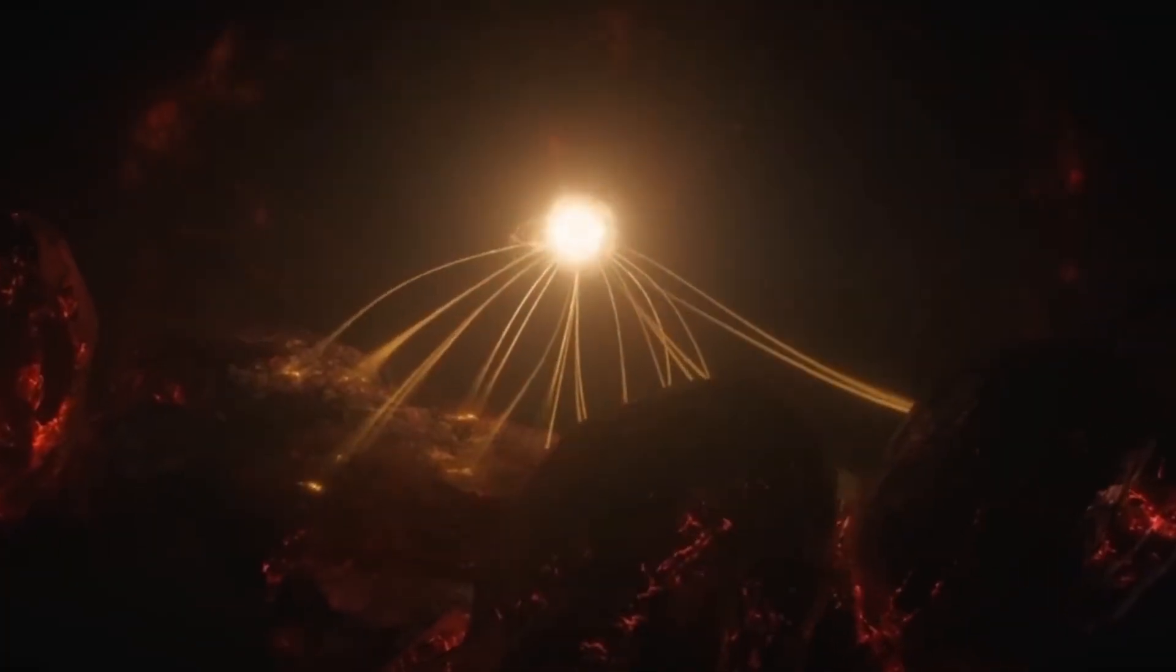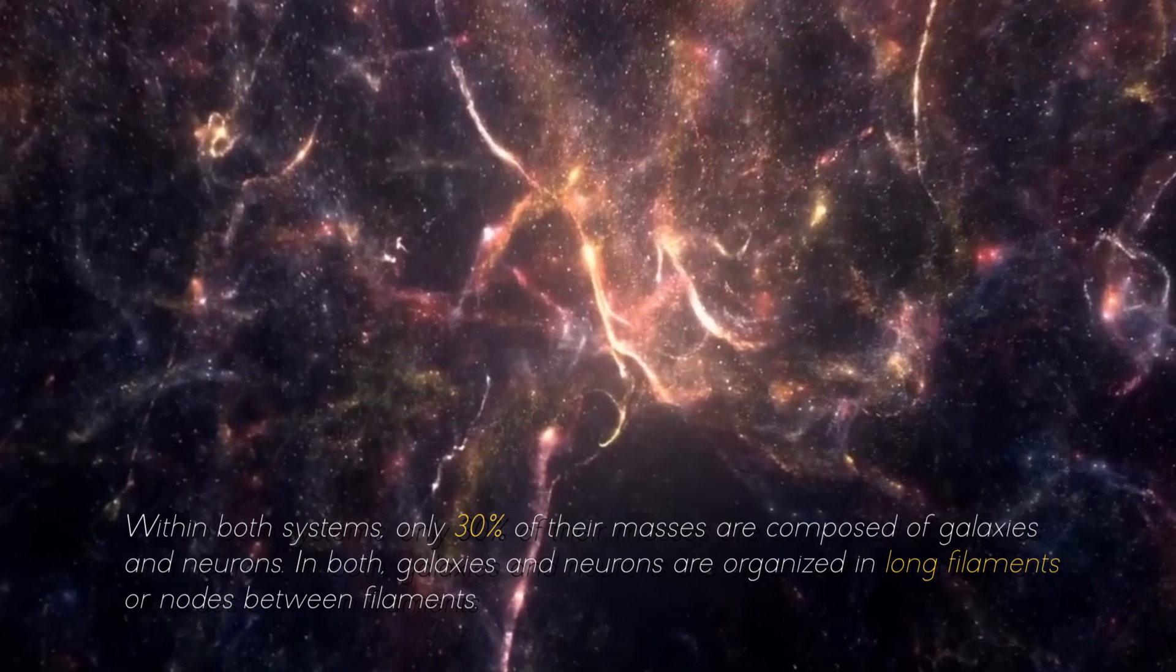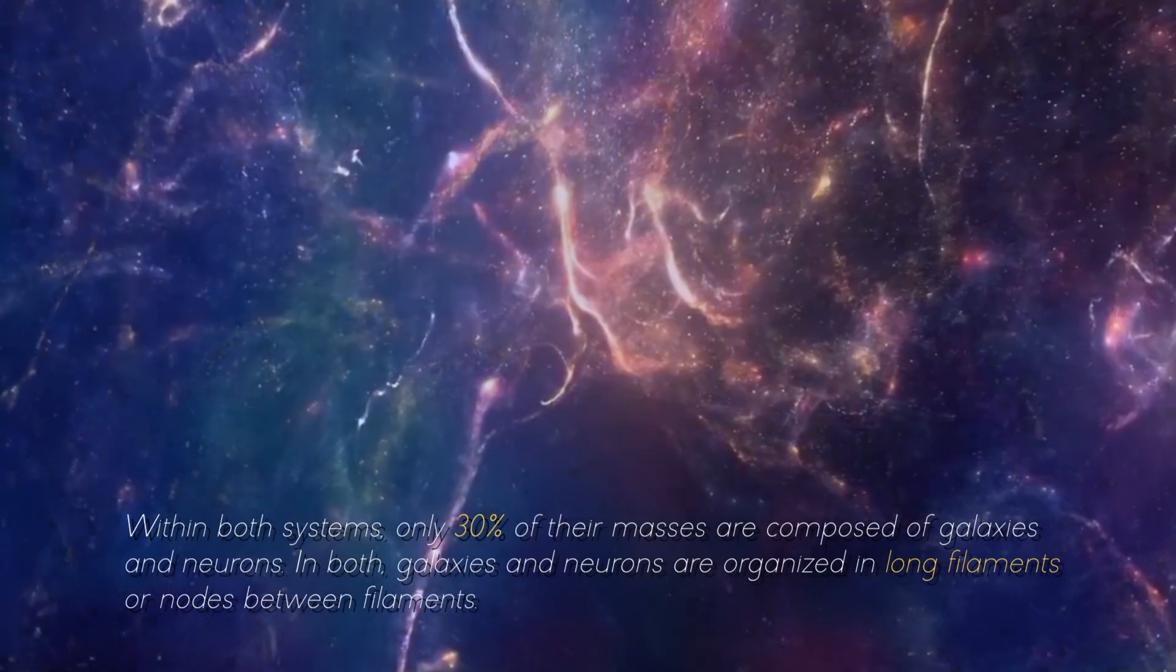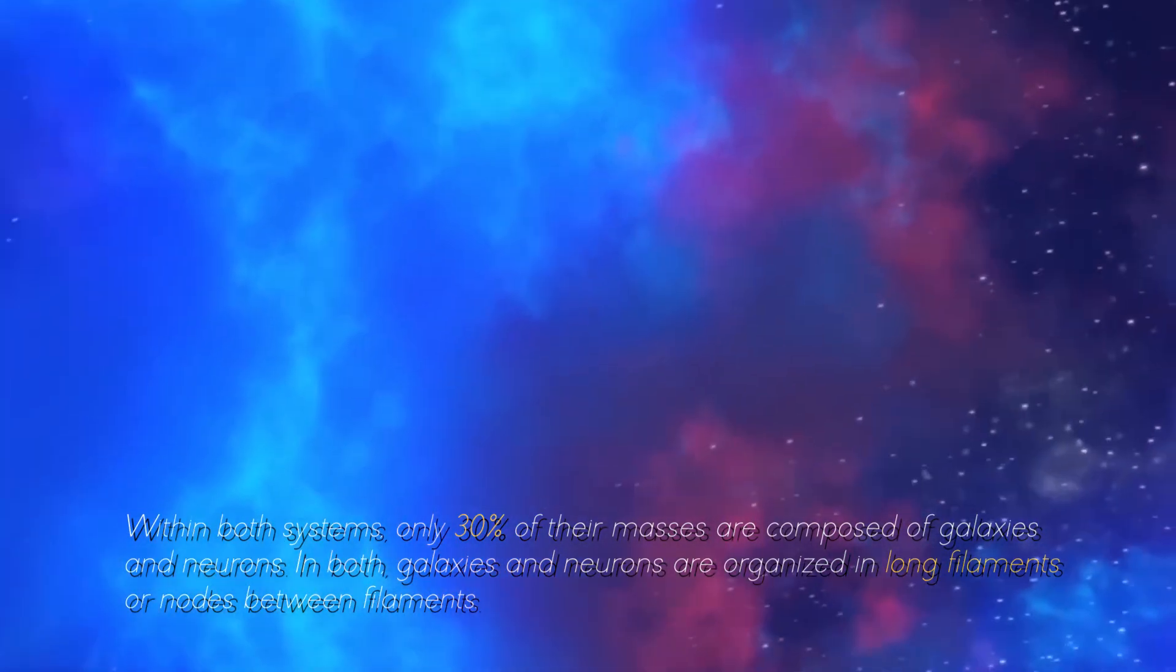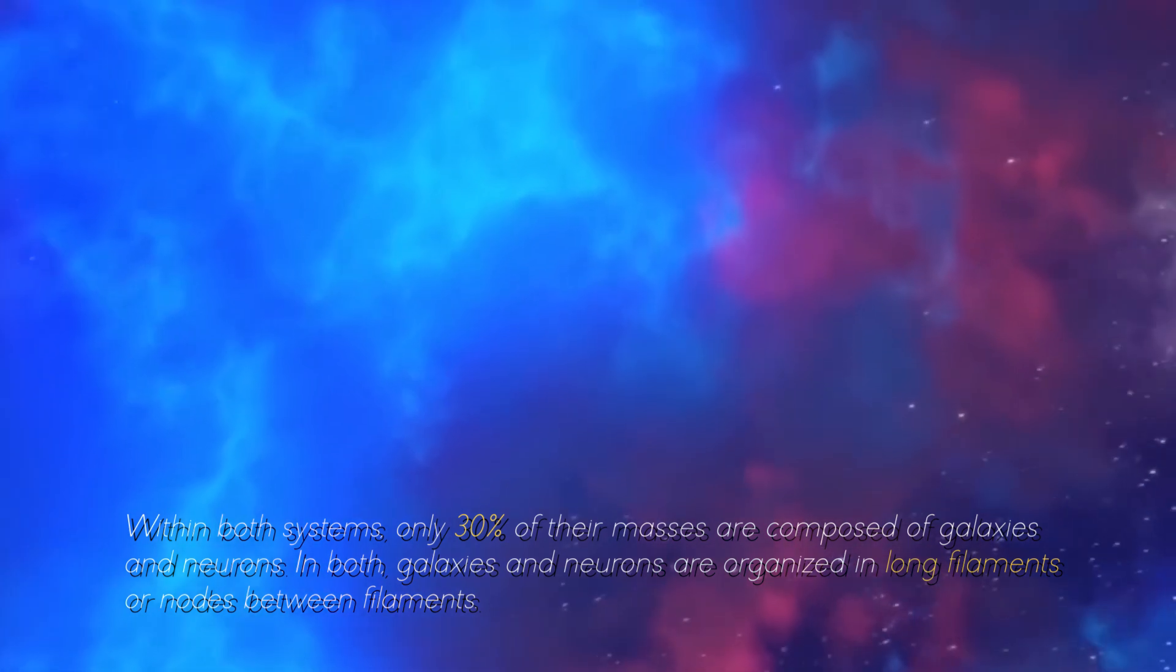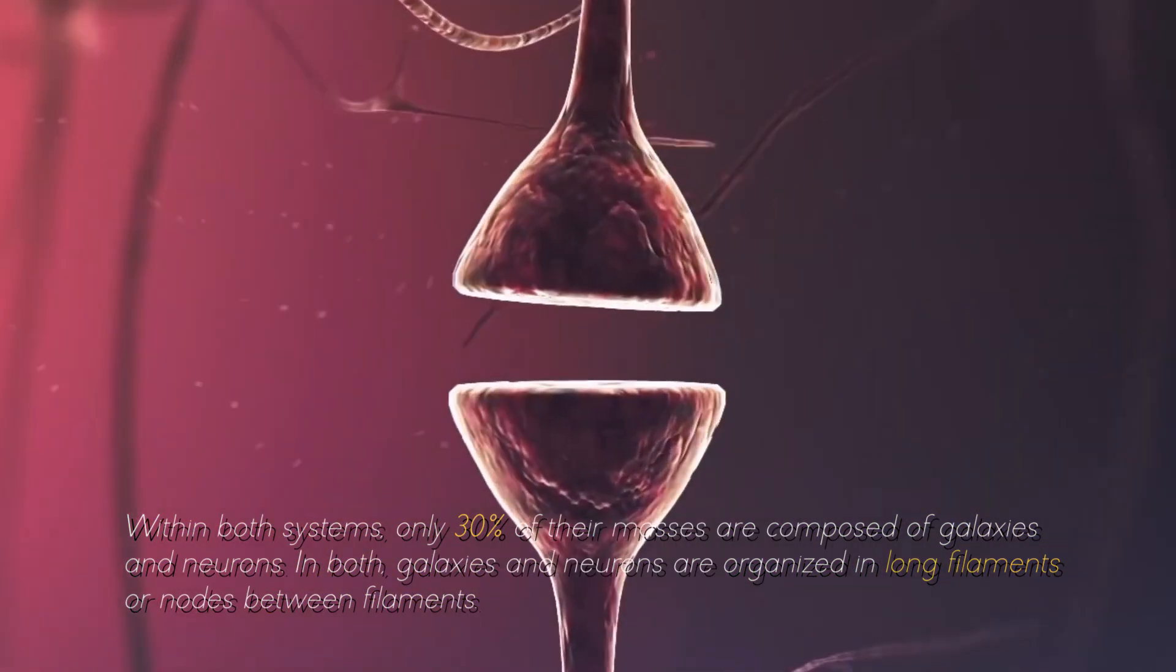Thus, it is not that our brain is like a universe, or that the universe is a brain of titanic proportions, but that their dynamics are similar. Within both systems, only 30% of the masses are composed of galaxies and neurons. In both, galaxies and neurons are organized in long filaments and nodes between filaments.